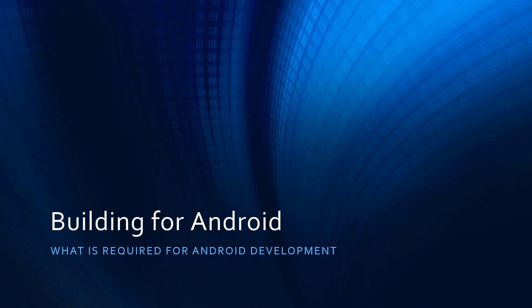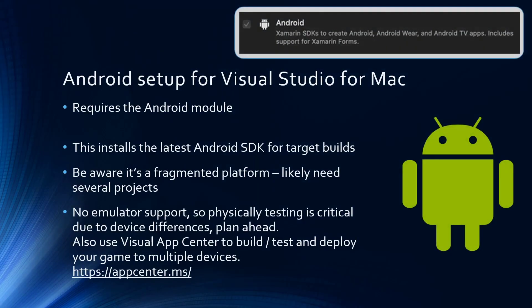So we've got our development environment and MonoGame installed. For Android, you need to make sure you have the Android target installed in Visual Studio for Mac, which gives you the latest Android SDK. Beware — it is a very large program — so run the SDK update to make sure you've got whatever versions of the Android SDK and NDK installed to meet your target platforms. There's no current emulator support for Mac that I'm aware of, but you can use the Visual Studio App Center, which will build Android for us and also test on physical devices. Or simply plug in your Android device and deploy to it directly, which is the most preferred way. But use App Center for building, testing, and deploying builds out to multiple devices for testing.